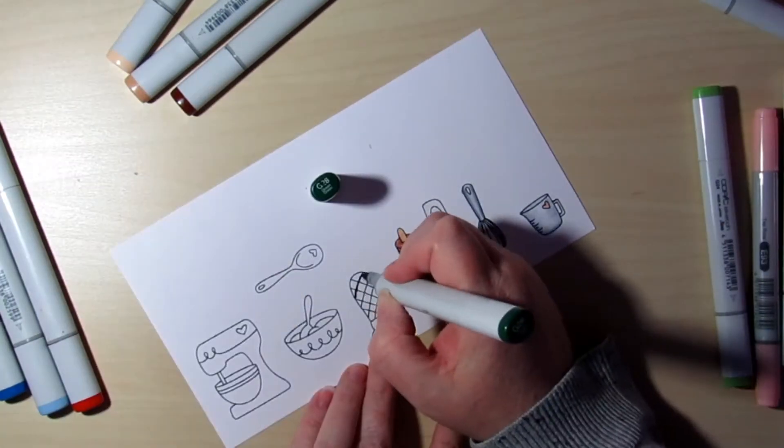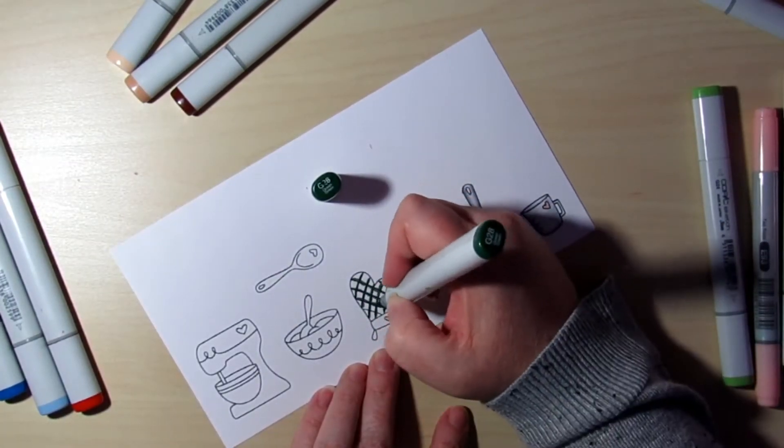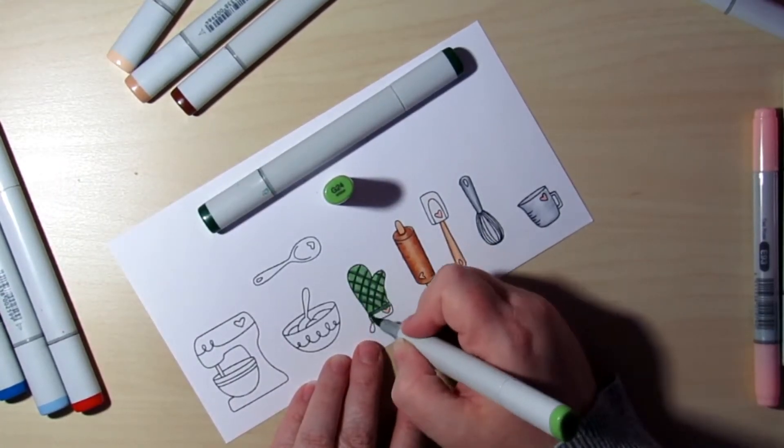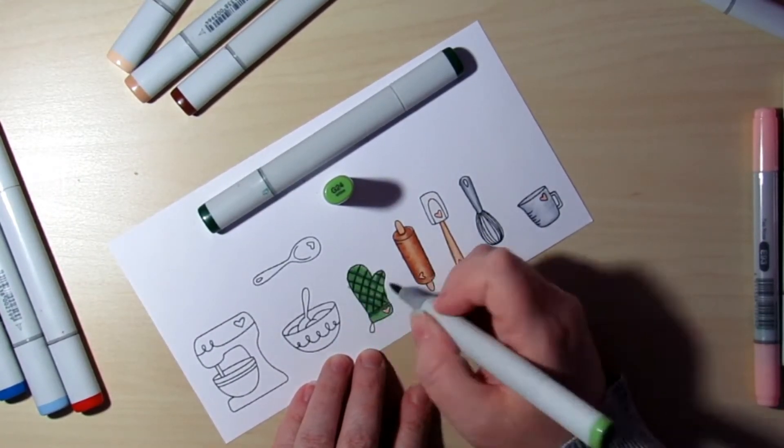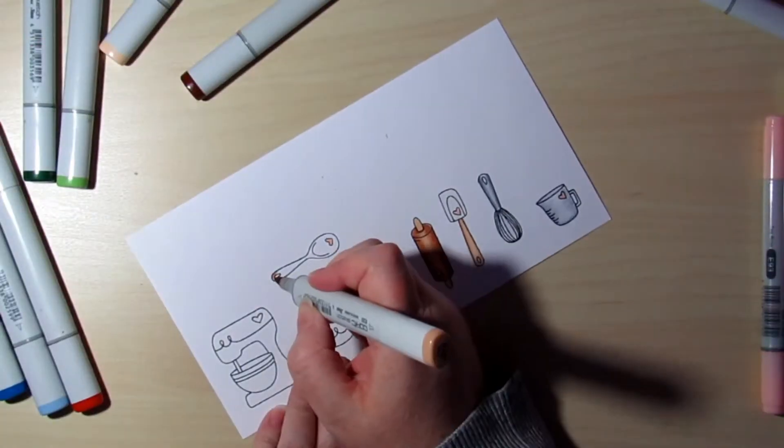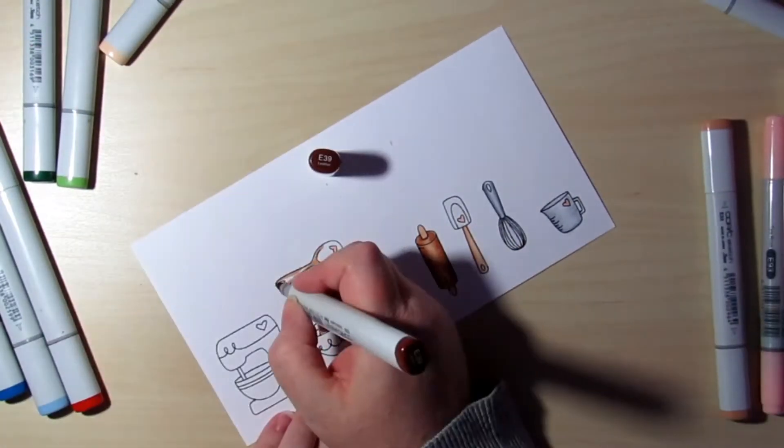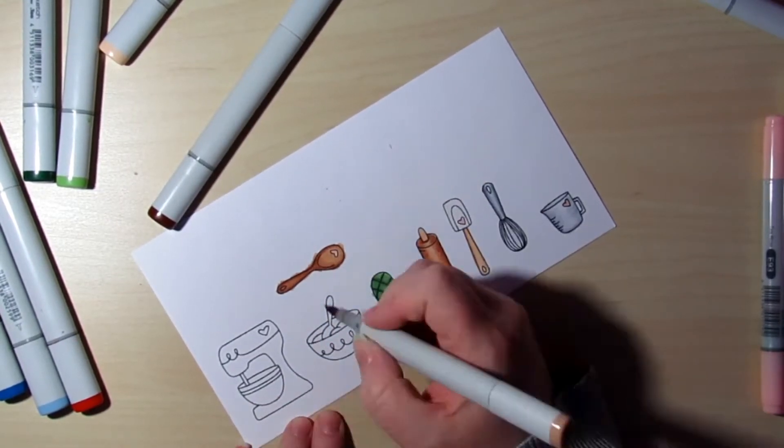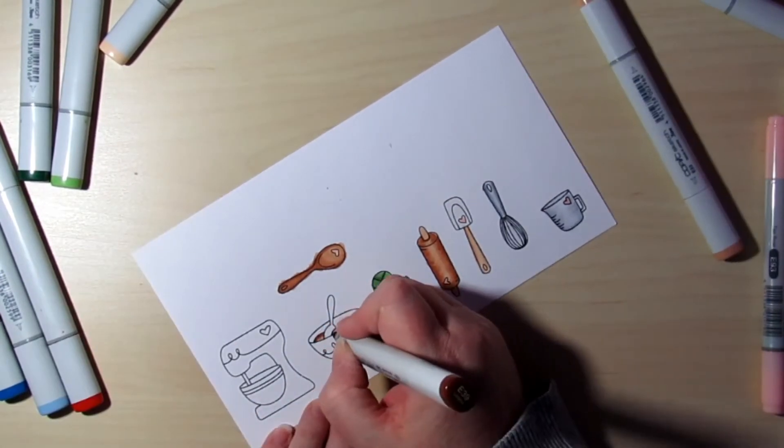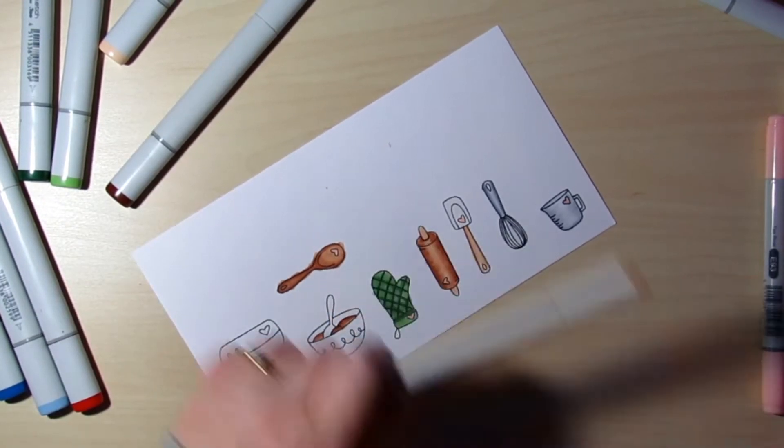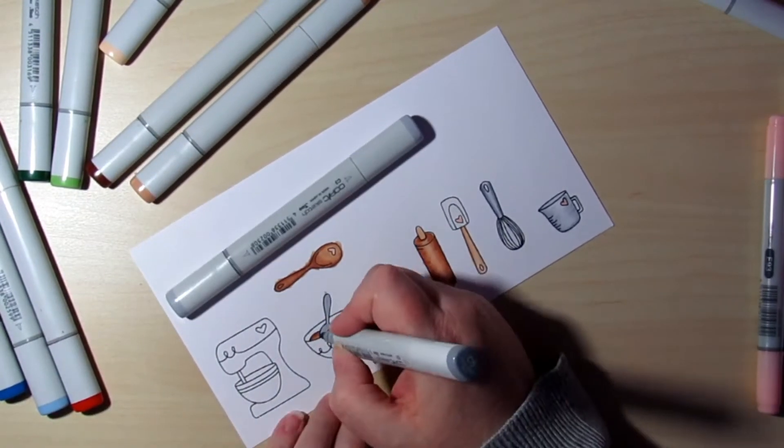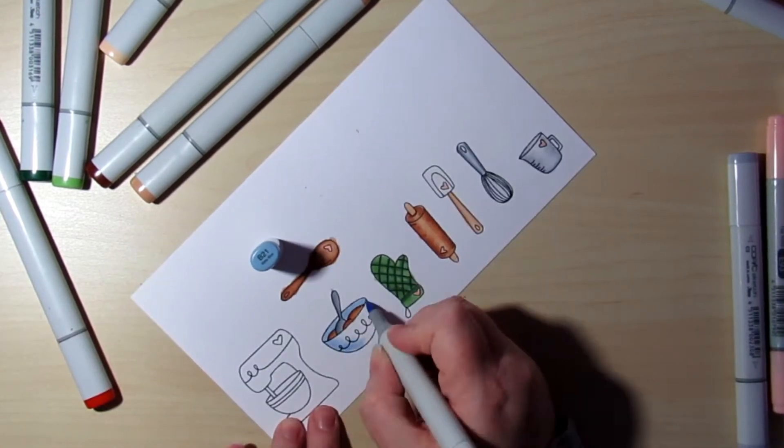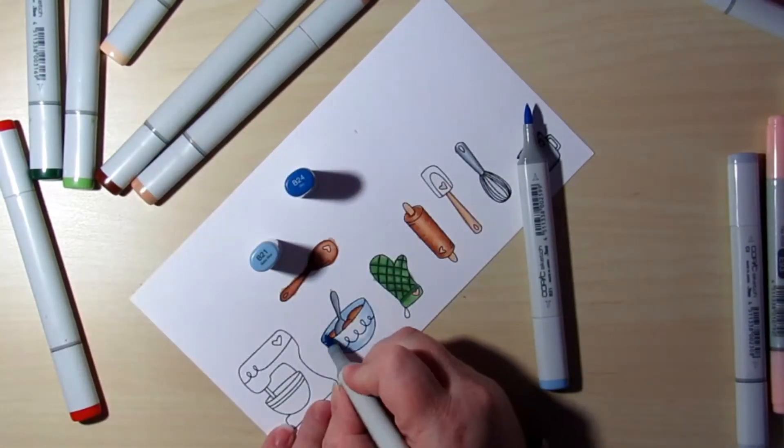And the pink that I'm using there is an E93. So I'm using G24 and G29 for the oven mitt and again those same brown colors for this wooden spoon. And for the inside of whatever is being baked in this bowl, for my blues I am using B21 and B24.